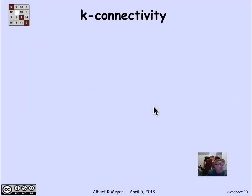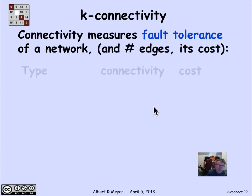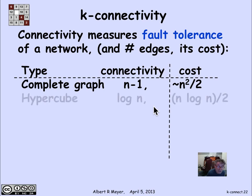So to summarize about some graphs that we know about, given that connectivity measures fault tolerance in a network, we're interested in how many edges did it take to achieve this level of connectivity. So the number of edges is kind of a measure of the cost. And the complete graph on n vertices is n minus 1 connected. But it has about n squared over 2 edges.